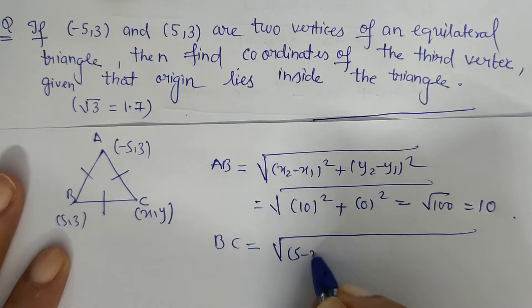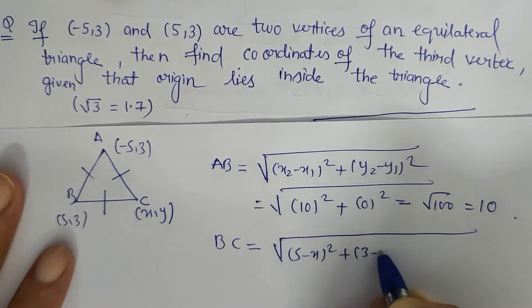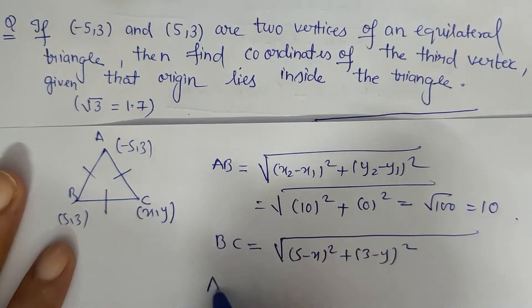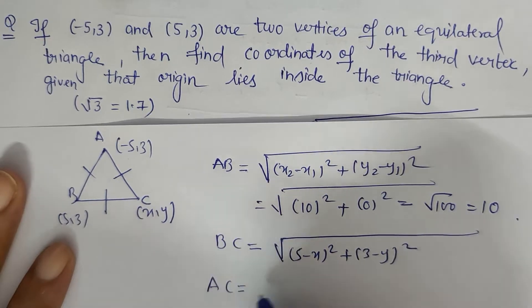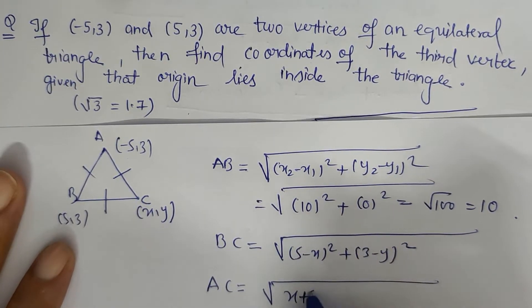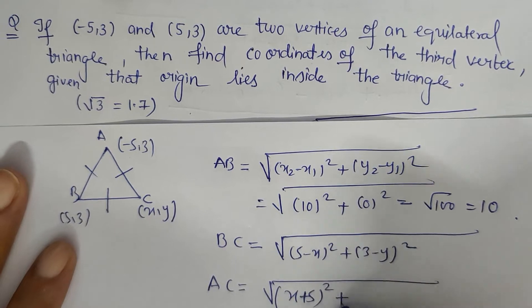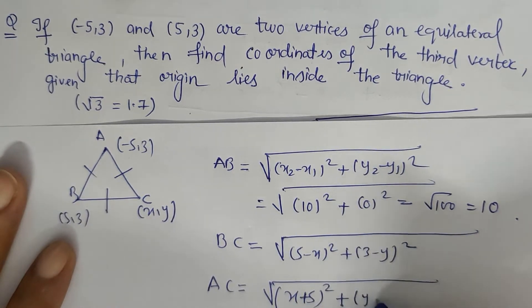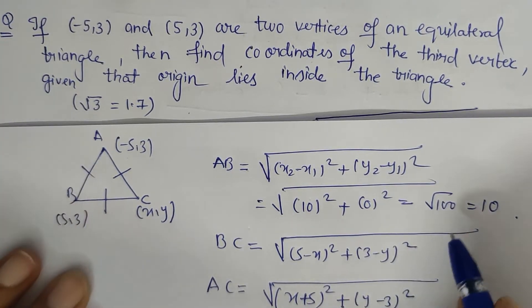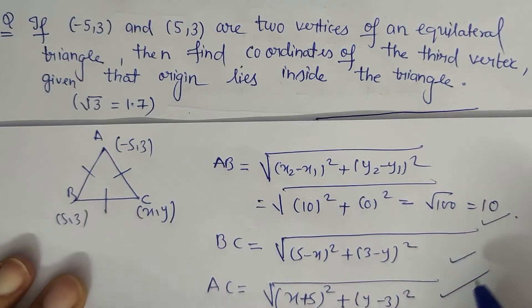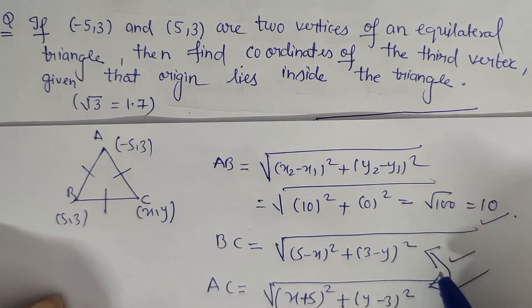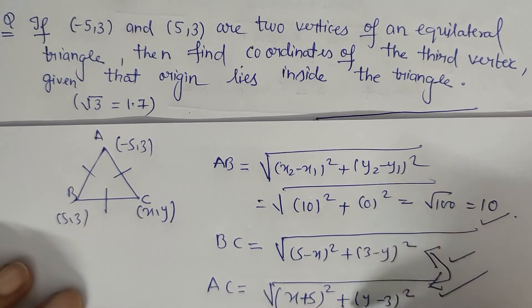Now BC is the square root of 5 minus x whole square plus 3 minus y whole square, and AC is the square root of x plus 5 whole square plus y minus 3 whole square. Since all three sides are equal, we can equate these distances to each other.